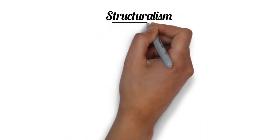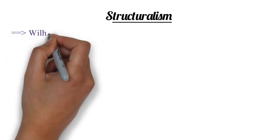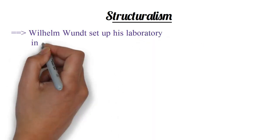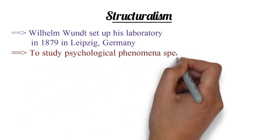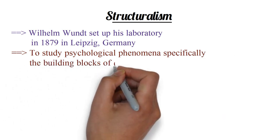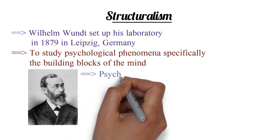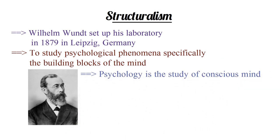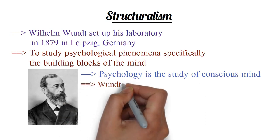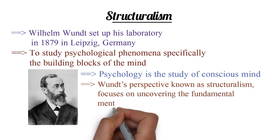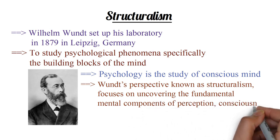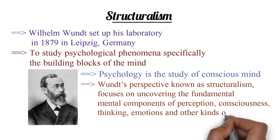Structuralism. Wilhelm Wundt was a physiologist. He wanted to study human mind by applying scientific principles. He set up his laboratory in 1879 in Leipzig, Germany. It was set up to study psychological phenomena, specifically the building blocks of the mind. According to him, psychology is the study of conscious mind. He believed that every experience could be broken down into its individual components like emotions and sensations. Wundt's perspective, known as structuralism, also focuses on uncovering the fundamental mental components of perception, consciousness, thinking, emotions, and other kinds of mental states and activities.